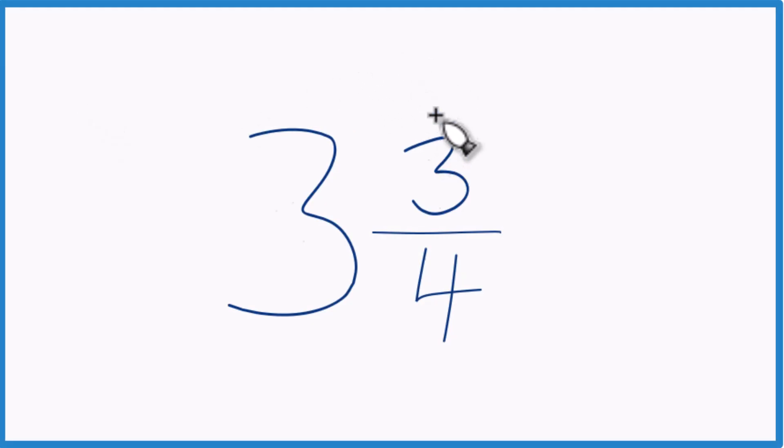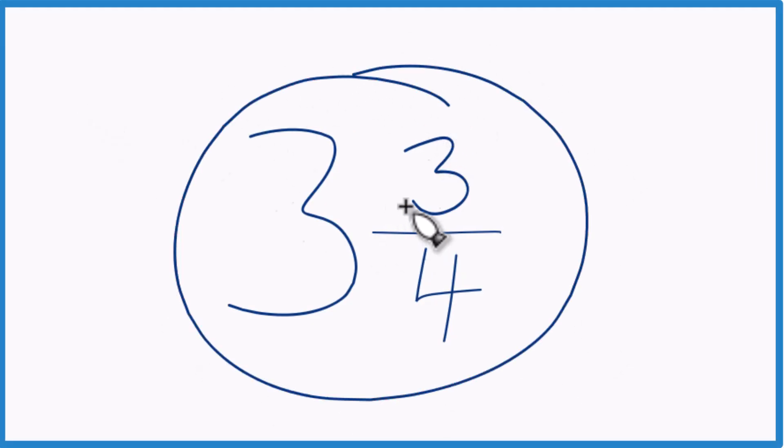So if you're given the mixed number 3 and 3 fourths, here's how you can get that to be an improper fraction.